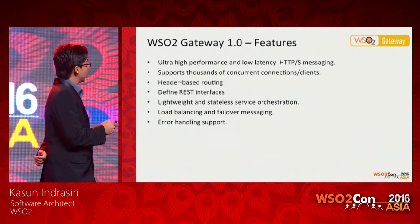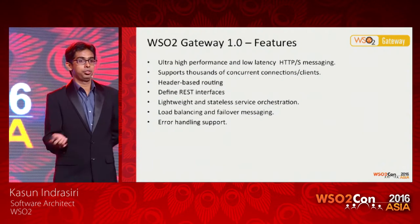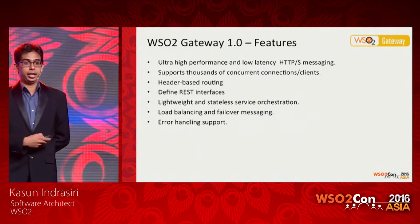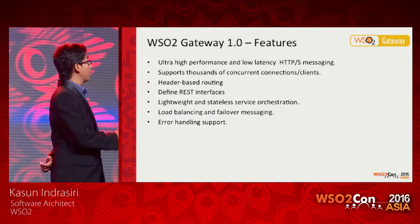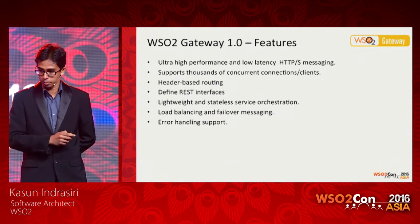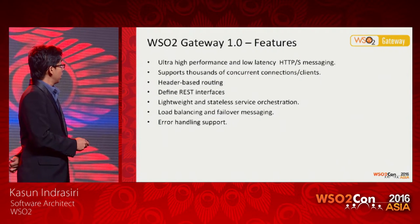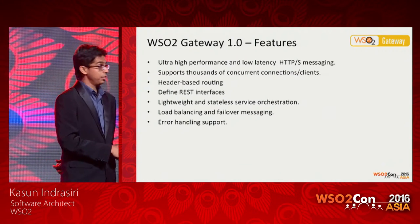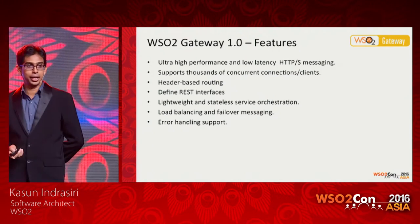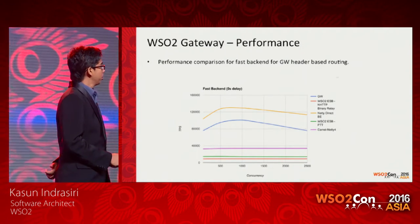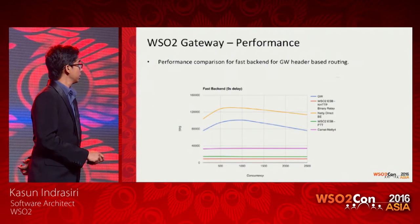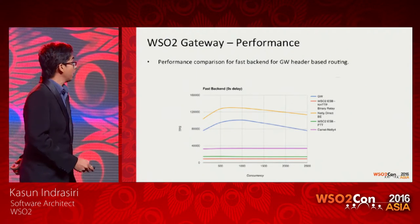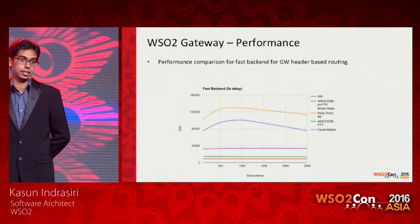Looking at the gateway's feature set, it provides ultra-high-performance, low-latency messaging. Compared to other products, this is around 13 MB in size and starts within two seconds, yet is extremely fast compared to all HTTP transports. It offers header-based routing — by looking at HTTP headers you can do complex message routing. It also exposes REST interfaces and provides load balancing, failover, and error handling support. In our performance comparison, latency is around less than one millisecond in this product.